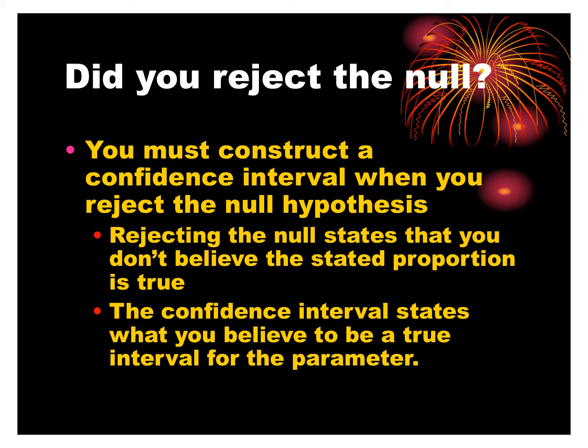If we rejected the null hypothesis, it's common practice to then say, 'I don't think it's 50%,' and create a confidence interval based on your sample to say what you think the real proportion is. If I fail to reject, I believe the null hypothesis is true, so there's no reason to create an interval — the null hypothesis value will already be in my interval.